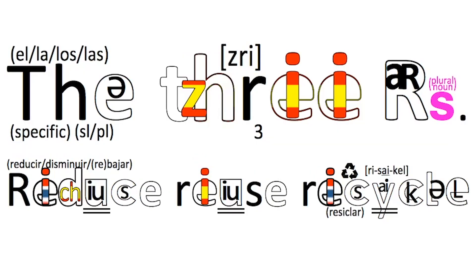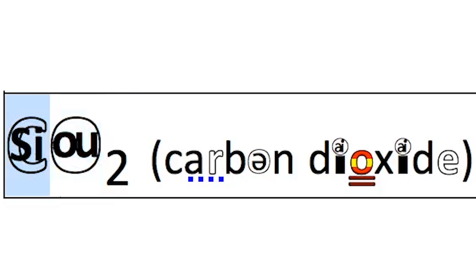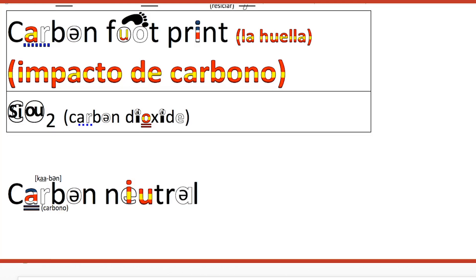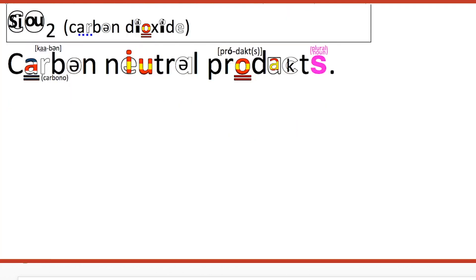Another thing to talk about is your carbon footprint, and CO2 is pronounced 'CO2' — carbon dioxide. Carbon neutral products — 'neutral' is the pronunciation. Carbon neutral products are generally more expensive than normal products.